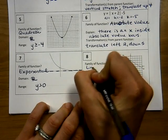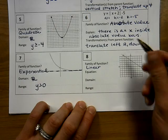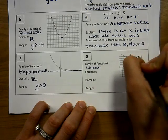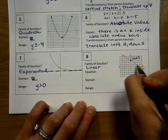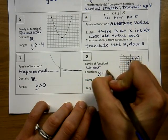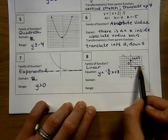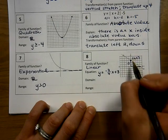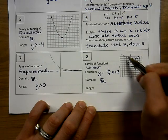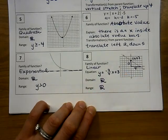Because the graph is a line, this is a linear function. Linear functions can be written in slope-intercept form, point-slope form, or standard form. I can see the y-intercept is 3, and the slope is negative 3 over 4 — down 3, right 4 — so I can write it as y equals negative three-fourths x plus 3. The domain is all real numbers, and the range is also all real numbers.